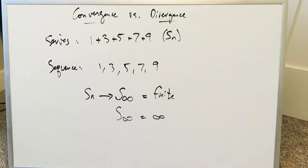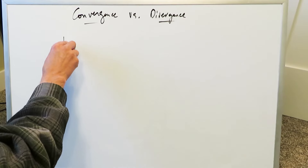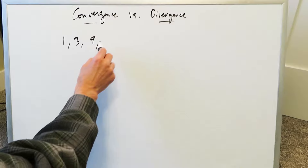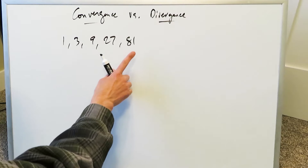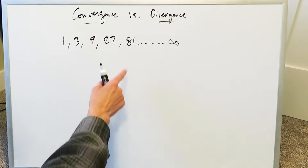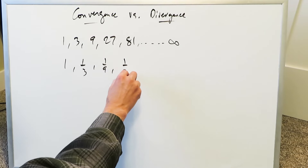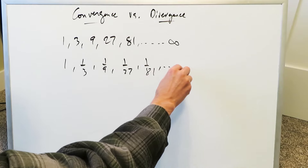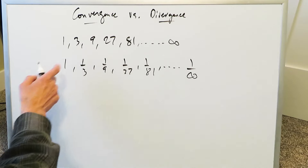Our particular interest is in infinite series, especially an infinite geometric series. Look at these: I have 1, 3, 9, 27, 81 — that's a sequence, but we'll talk about series because when you bring in the plus sign, you've converted the sequence into a series going to infinity. Contrast this with 1, 1/3, 1/9, 1/27, 1/81, all the way up to 1/infinity. These are both sequences, but both can be viewed as series when looking at their sums.